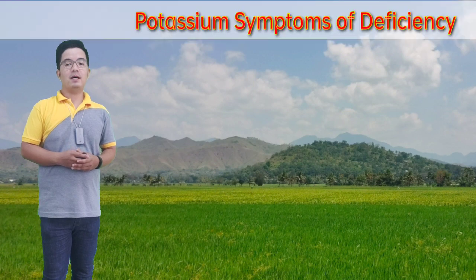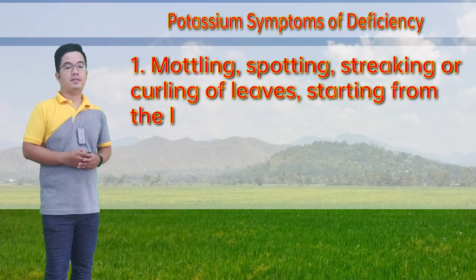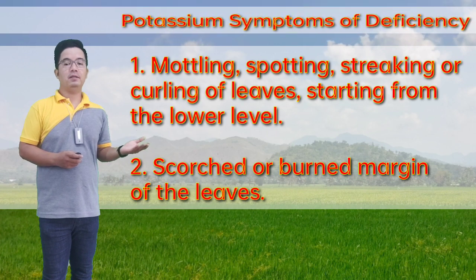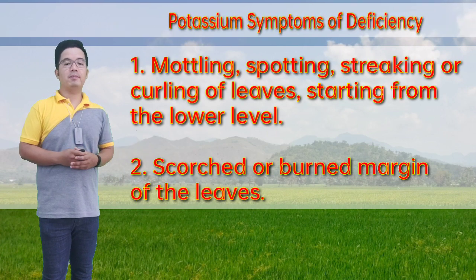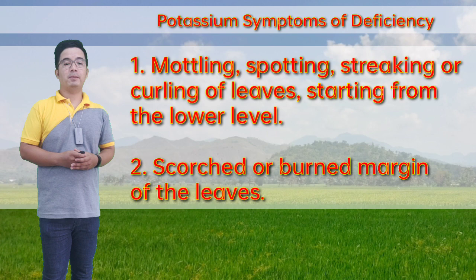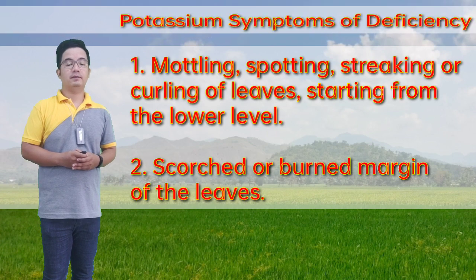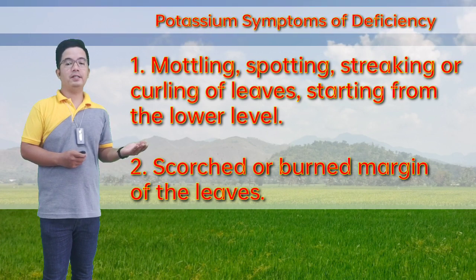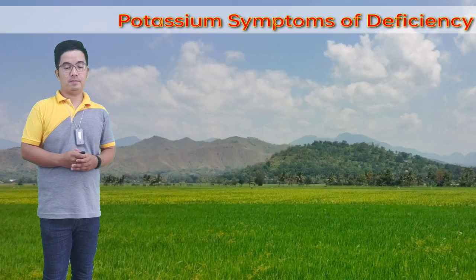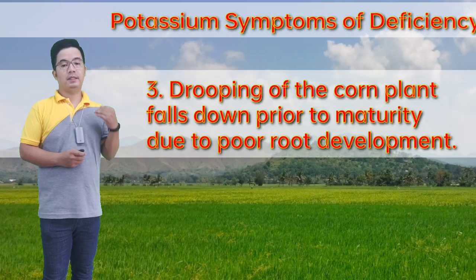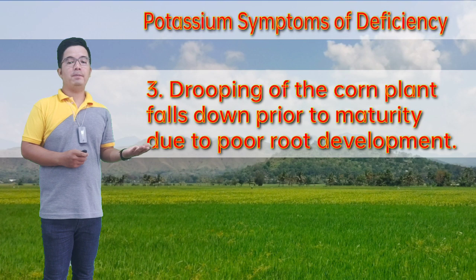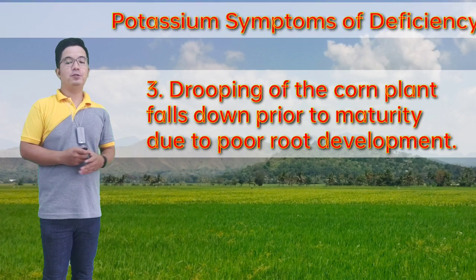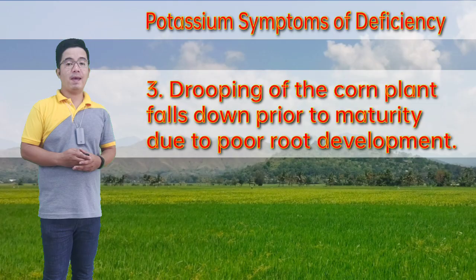Symptoms of potassium deficiency: first, scorching, spotting, streaking, or curling of leaves starting from the lower level. Another symptom is a scorched or burned margin of the leaves. Third, lodging of the corn plant — the plant falls down prior to maturity due to poor root development.